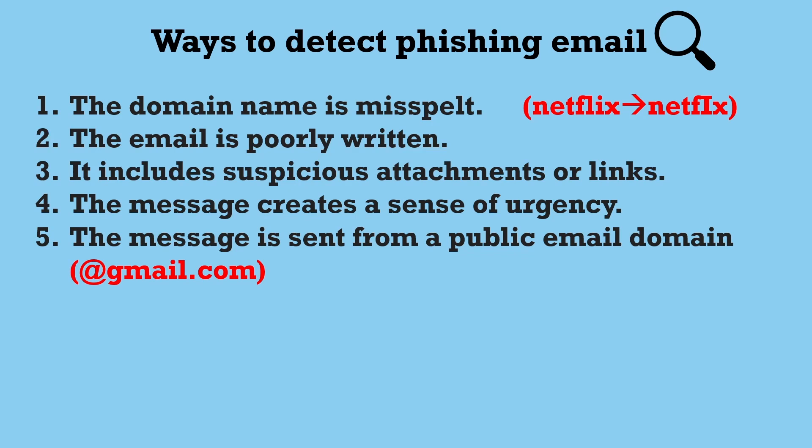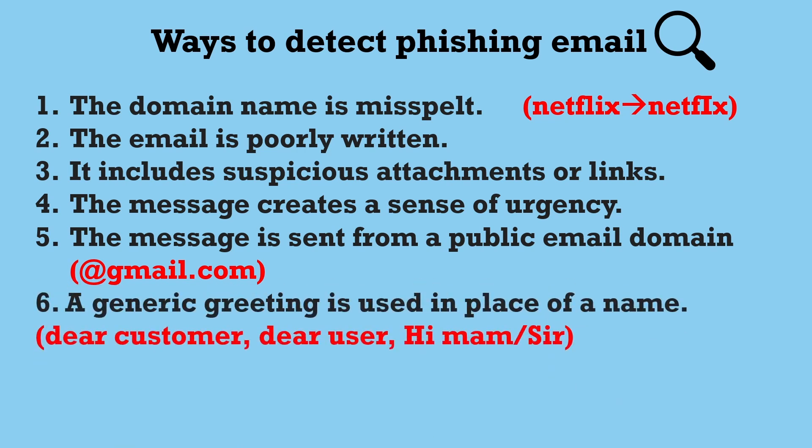Number five is the message is sent from a public email domain. The most obvious way to spot a bogus email is if the sender uses a public email domain such as gmail.com. So if you see any email coming from gmail.com and they are asking you to give them personal information like your name, phone numbers, or email, I think it is a great sign that it is a phishing email. Number six is a generic greeting is used in place of a name, like 'dear customer,' 'dear user,' 'hi ma'am,' 'hi sir,' 'hello ma'am,' 'hello sir' — these types of generic greetings the attacker uses in a phishing email.